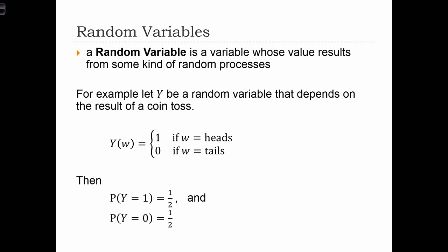For example, if Y is a random variable that depends on the result of a coin toss, let's represent the outcome of a coin toss with the letter W. And the random variable Y depends on the outcome W. And we'll let Y equal 1 when W is heads, and we'll let Y equal 0 when W is tails.